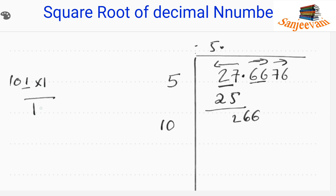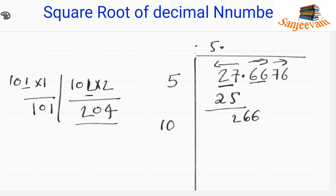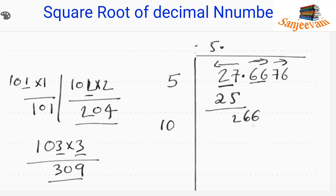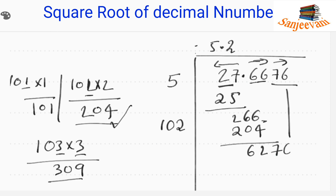Trying digit 1: 101×1=101 — less than 266. Trying digit 2: 102×2=204 — less than 266. Trying digit 3: 103×3=309 — more than 266. So we choose 2. We write 2 here. Subtracting 204 from 266 gives us 62.